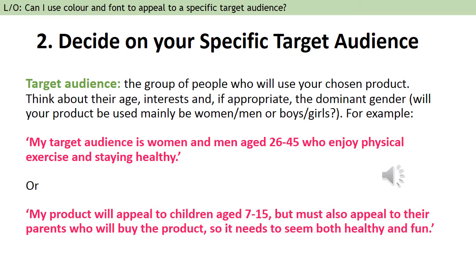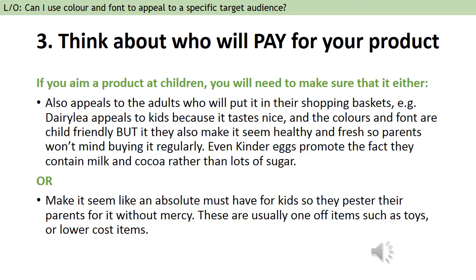Or, my product will appeal to children aged 7 to 15, but must also appeal to their parents who will buy the product, so it needs to seem both healthy and fun. This is a really important point when thinking about a target audience of children — children don't generally buy their own stuff, they don't have money coming in. A child may want a product, but they have to ask someone to get it for them, so you've got to think about who's paying for it.